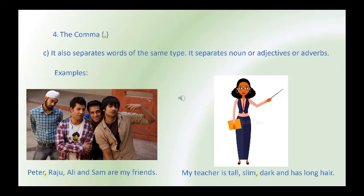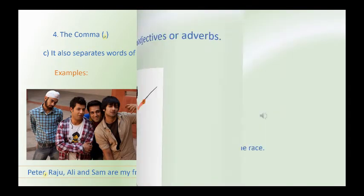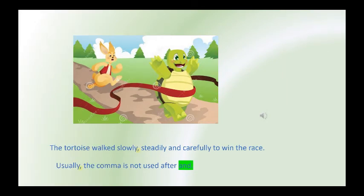Comma is also used to separate words of the same type. It separates nouns or adjectives or adverbs. Example: Peter, Raju, Ali and Sam are friends. Or, my teacher is tall, slim, dark and has long hair. The tortoise walk slowly, steadily and carefully to win the race. Usually, the comma is not used after the word and.